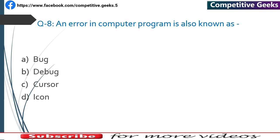Number 8: An error in a computer program is also known as a Bug. The process of fixing errors is called Debugging.